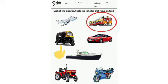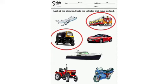Now which vehicle is this? This is an auto rickshaw. And auto rickshaw moves on land. So we will circle it. Now which vehicle is this? This is a car. And car also moves on land. So we will circle it.